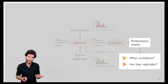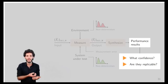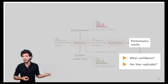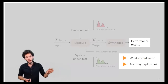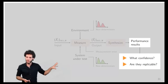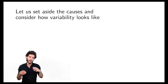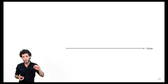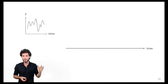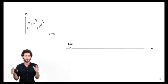With all that taken into account, we may wonder: what is the actual confidence of those synthesized performance results, and can we consider them replicable? Those are hard questions. The key message here is that instead of looking at the sources of variability, it's more interesting to revert the problem and look at how variability actually looks like in the data. So let's start with the time axis along which we do our experiments.